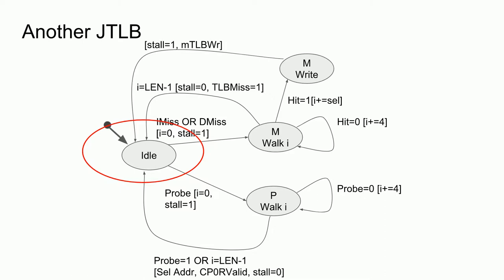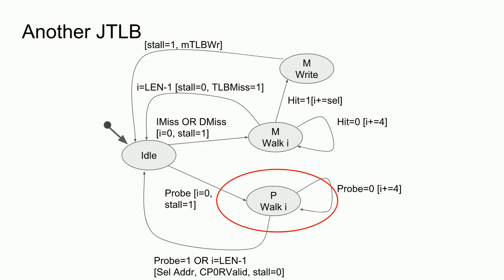We start in the idle state, which allows the state machine to respond to misses, probes, reads, and writes. Writes are handled separately since only the system coprocessor writes to the JTLB. Reads are trivial since they are done by specific entry index using block RAMs, so they are allowed in the idle state. The two main cases requiring the state machine are the probe instruction and a micro-TLB miss. For a probe, we enter the probe state and cycle through each group of four entries every clock cycle. If there is no probe success, we continue until the last entry and return a probe failure; if successful before the last set of four, we return early. Probe only needs to signal the system coprocessor that the result is ready to be latched into the CP0 register file.